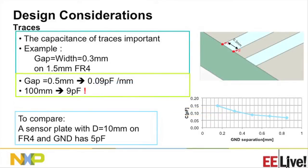Traces play a significant role in board design. For a 0.3 mm wide trace, it's 0.09 picofarad per mm. So if you have a 100 mm trace, you are looking at 9 picofarad, which is a significant amount of capacitance when you are trying to detect a change — because you already have your base established for your device. So how you are routing your trace, the size of your trace, and the distance between your traces are very important parameters when doing your board layout with a capacitive sensor. For reference, a sensor plate with 10 mm separation from the FR4 ground has about 5 picofarad capacitance.